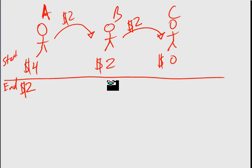Person B gained $2, but they also gave up $2. So they actually had no change in their money when all is said and done. So they're at $2. Person C went from $0 and they gained $2, so they're at $2.